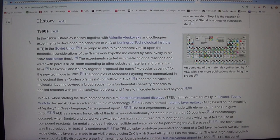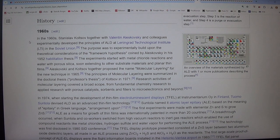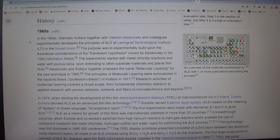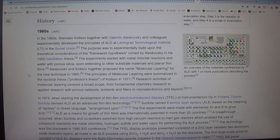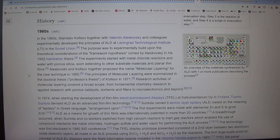History. 1960s. In the 1960s, Stanislav Koltsov together with Valentin Aelskovsky and colleagues experimentally developed the principles of ALD at Leningrad Technological Institute (LTI) in the Soviet Union. The purpose was to experimentally build upon the theoretical considerations of the framework hypothesis coined by Aelskovsky in his 1952 habilitation thesis. The experiments started with metal chloride reactions and water with porous silica, soon extending to other substrate materials and planar thin films. Aelskovsky and Koltsov together proposed the name molecular layering for the new technique in 1965. The principles of molecular layering were summarized in the doctoral thesis of Koltsov in 1971.